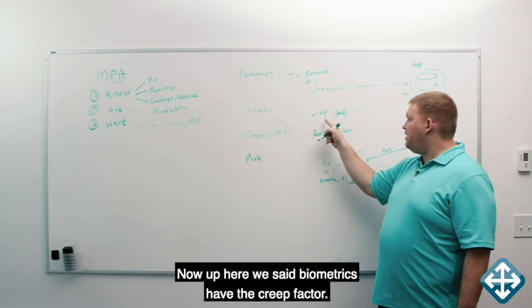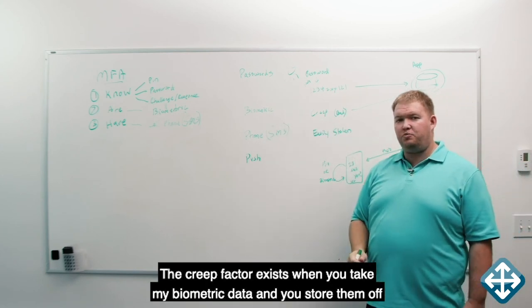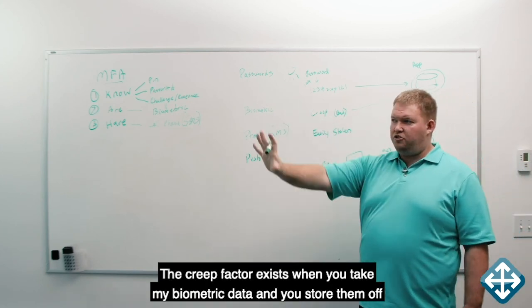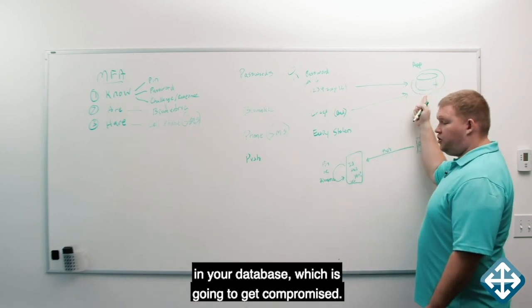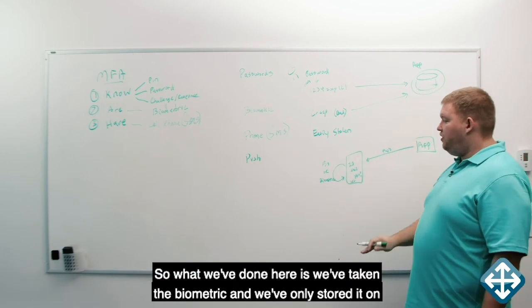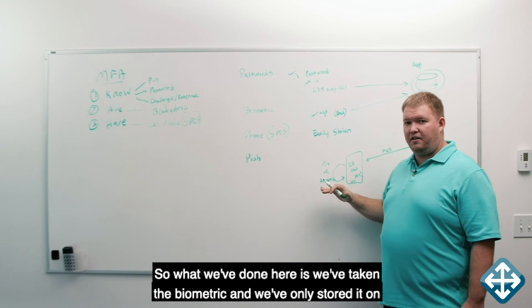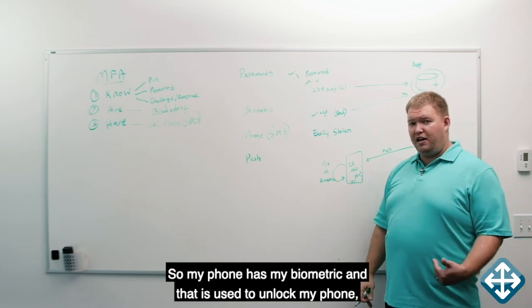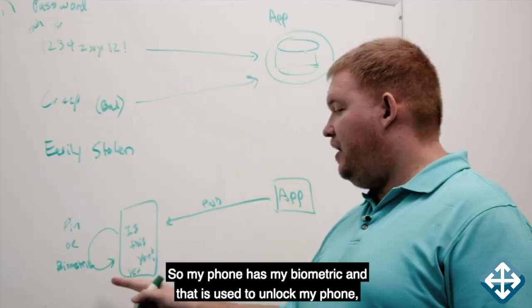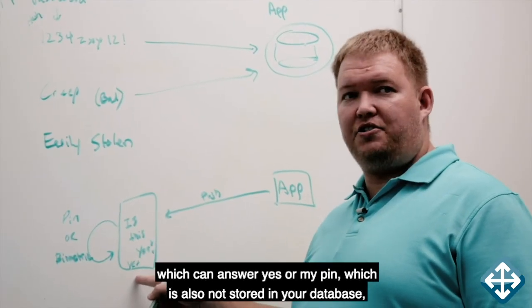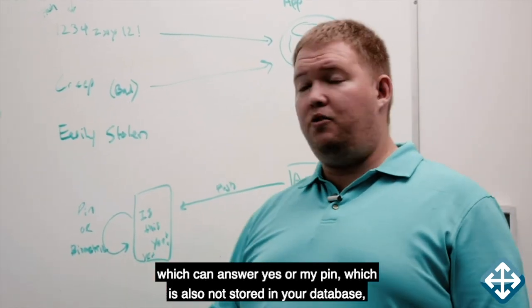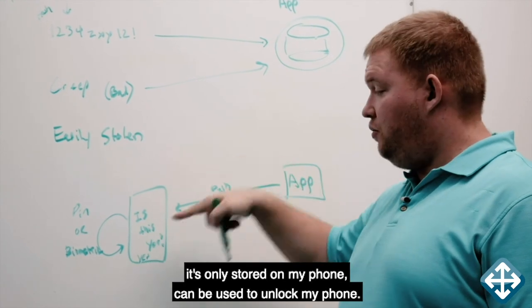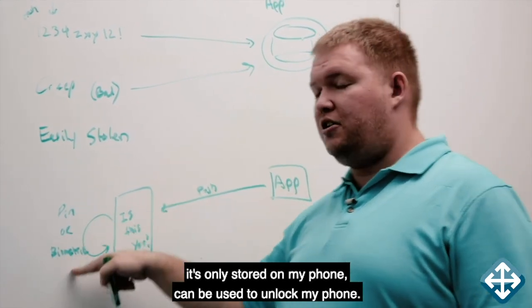Now, up here we said biometrics have the creep factor. The creep factor exists when you take my biometric data and you store them off in your database, which is going to get compromised. So what we've done here is we've taken the biometric and we've only stored it on my device. So my phone has my biometric and that is used to unlock my phone, which can answer yes. Or my pin, which is also not stored in your database, it's only stored on my phone can be used to unlock my phone.